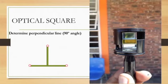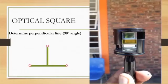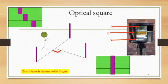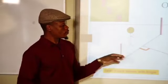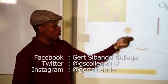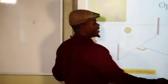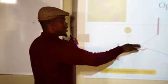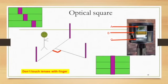The optical square is used to determine an angle of 90 degrees between two perpendicular lines. As you hold the optical square and approach two ranging rods placed apart, the rods will appear in the optical square. When all three points are in a straight line, the point where you are standing is perpendicular to the other two points.